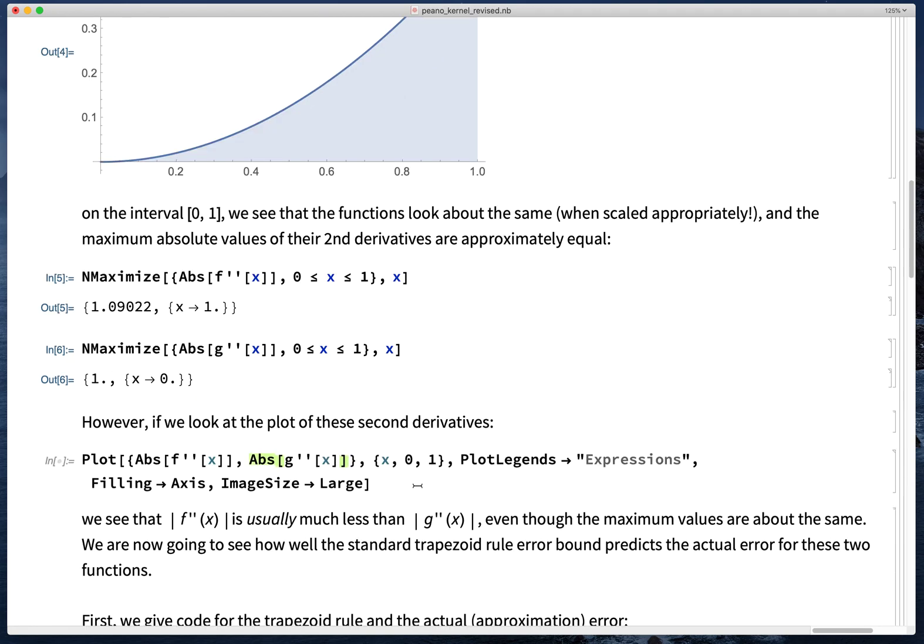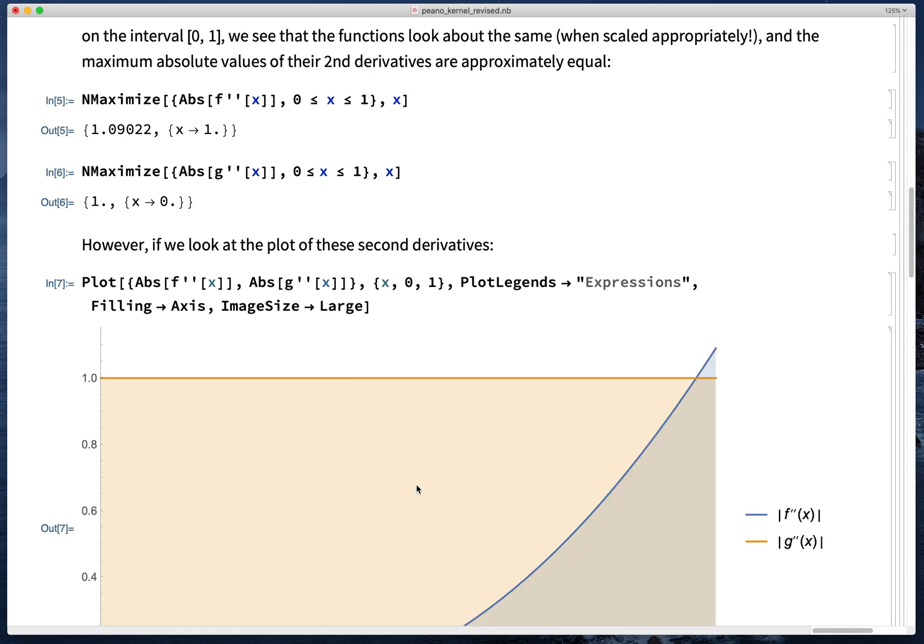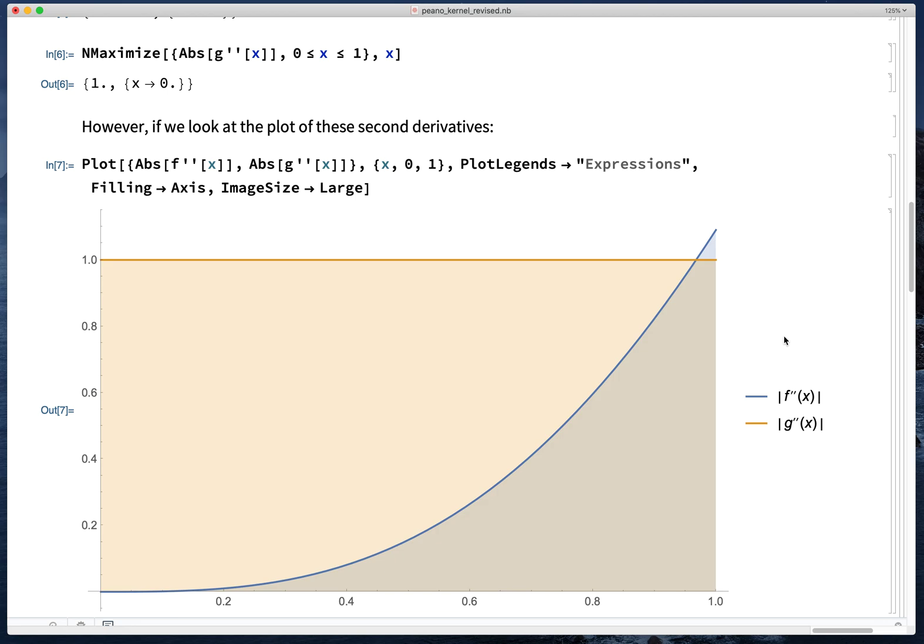So let's look at these second derivatives. We see that f'' does indeed appear to be maximized at one. g'' is constant because g is a parabola, so its second derivative is a constant function.